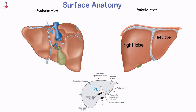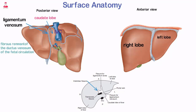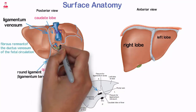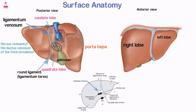The smallest lobe is the caudate lobe, located on the inferior and posterior liver surface, sandwiched between the IVC and the ligamentum venosum — a fibrous remnant of the ductus venosum of the fetal circulation. The quadrate lobe is located on the anterior inferior surface of the left lobe, between the gallbladder and the round ligament. The hilum of the liver, the porta hepatis, is located on the inferomedial border of the liver and is the central location for vessels to enter and exit the liver.